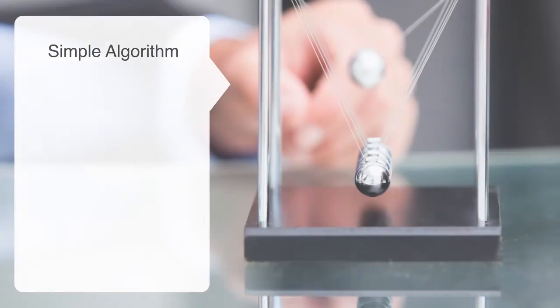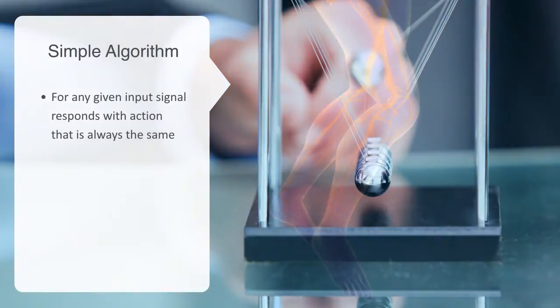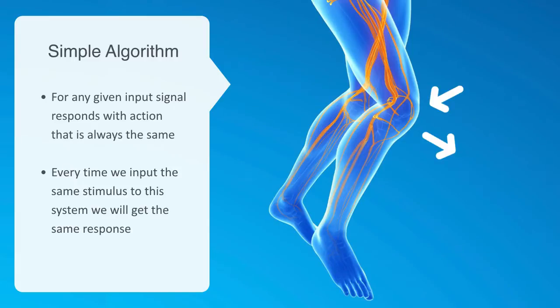The most basic form of logic an agent can have is one that simply responds to a given input signal with an output action that is always the same. For example, if one taps one's knee at the right location, it will trigger the nerves to actuate the muscles into generating a sharp, reactionary motion. Every time we input the same stimulus to this physiological system, we will get the same response.